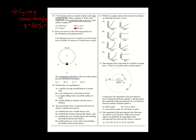Number nineteen: centripetal acceleration points toward the center. The car is at the bottom of the circle, so centripetal acceleration points toward point C — choice C. Number twenty: which body is in equilibrium? A satellite in circular orbit is changing direction, a cart rolling down an incline is accelerating, an apple falling freely is accelerating. A block sliding at constant velocity on a tabletop — that's equilibrium — choice D.